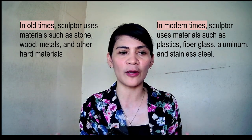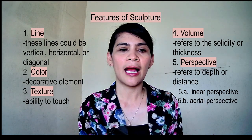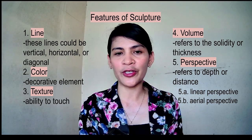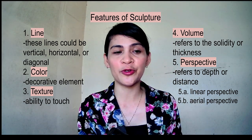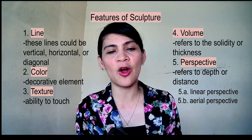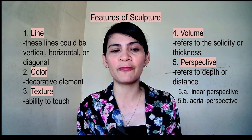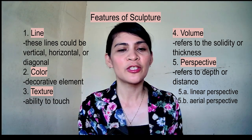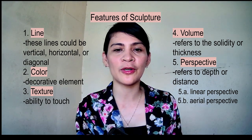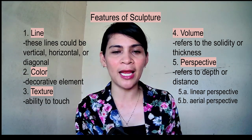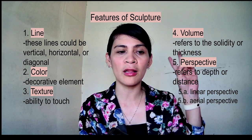There are a lot of features or characteristics to look for in a piece of sculpture, as in other forms of art. The first feature is line. In sculpting, artists are very concerned with line. These lines could be horizontal, vertical, and diagonal. These lines lead the viewer's eyes and give perspective to the subject of the sculpture. We can see this in sculptures displayed in public places, like statues in plazas.